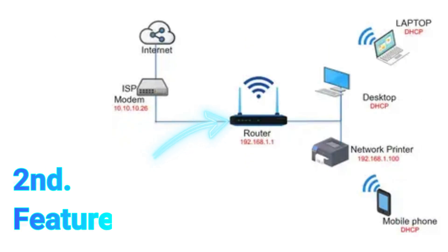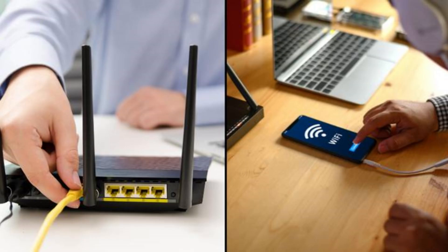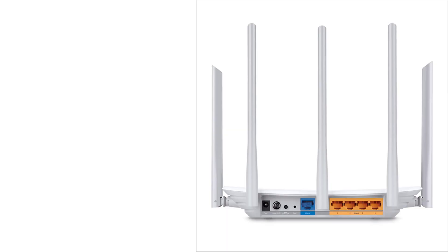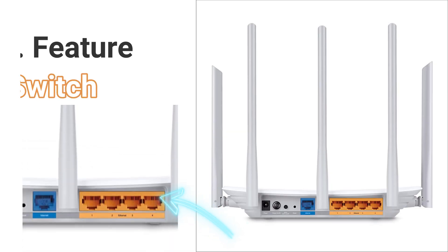The second functionality of a wireless router is its routing ability. The router is able to connect two different networks, like connecting our home or office network with the internet. Keep in mind that we don't have this feature in a wireless access point.